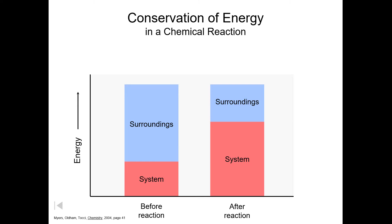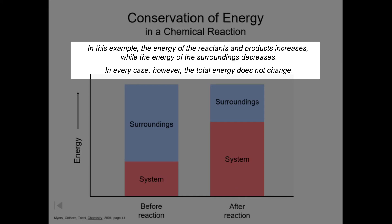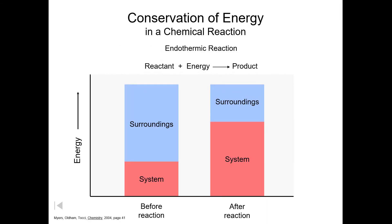We can pull energy into the system from the surroundings — this is called an endothermic reaction. In this example, the energy of the reactants and the products increases while the energy of the surroundings decreases. However, the total energy does not change. This would be an endothermic reaction where our reactant is combining with energy to form our product, which now has more energy than the system started with.